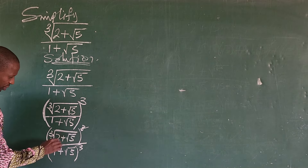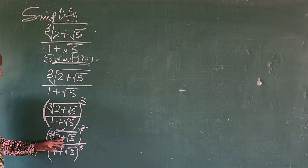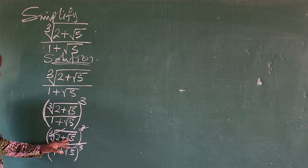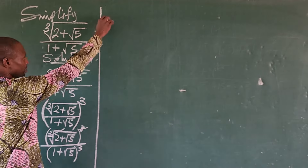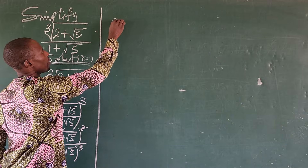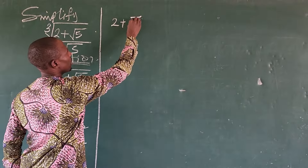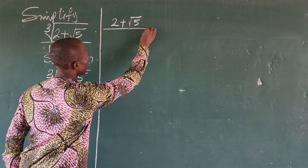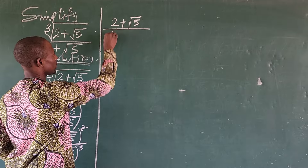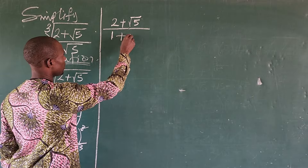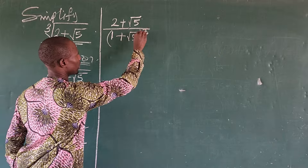So what happens here — the cube root and the power of 3 cancel each other. So we are left with 2 plus the square root of 5, all over 1 plus the square root of 5, all to the power of 3.